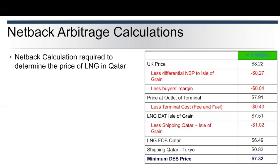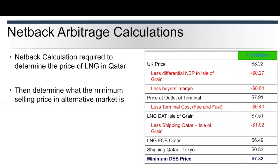If we take into account the shipping costs between Qatar and the Isle of Grain, we'll end up with what the free-on-board price is for LNG in Qatar. In this example, that is $6.49. If we then look at the shipping costs between Qatar and Tokyo, we can establish what that minimum direct ex-ship price is that we would need to be able to ship to Tokyo.